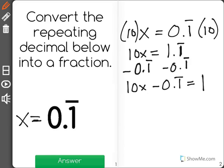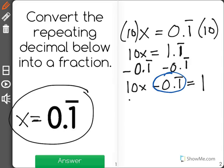The reason I did that is I wanted the whole number 1 over by itself. Looking back at the beginning, I could see that x equals 0.1 repeating. So I'm going to take this 0.1 repeating right here and change it to x. So now I have 10x minus x equals 1.